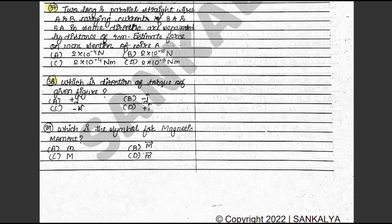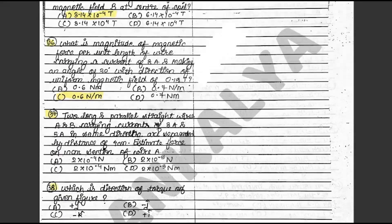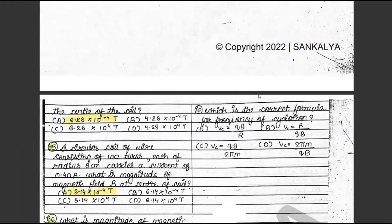Question 39: Which is the symbol of magnetic moment? The answer is D. This is on textbook page 168. Question 40: Which is the correct formula for frequency of cyclotron? The answer is C: Vc = QB upon 2πm. This is on textbook page 141.